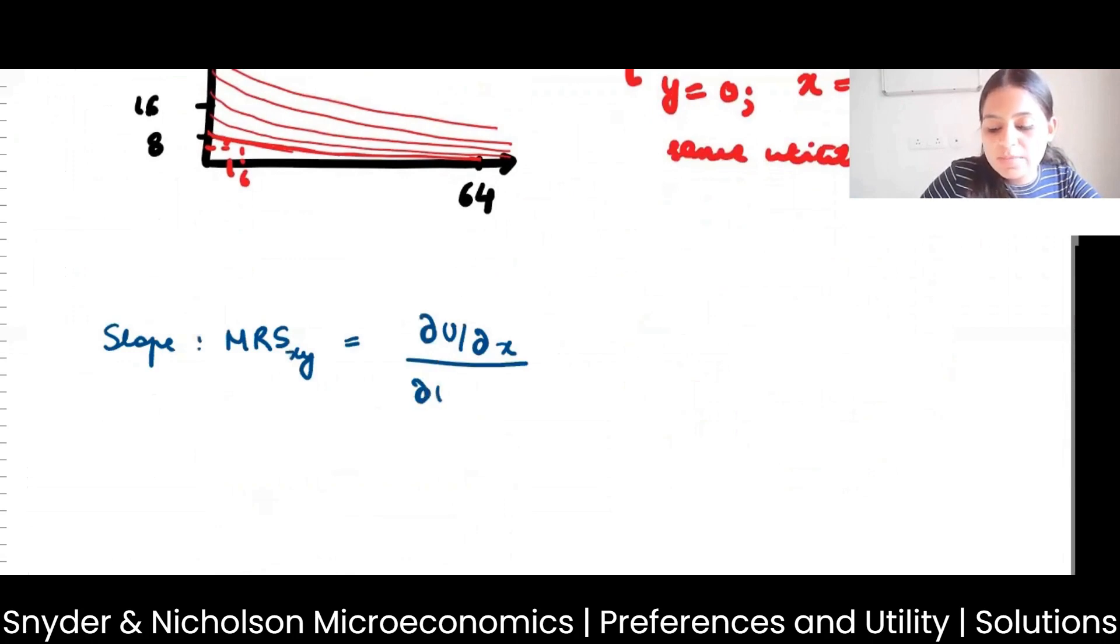So if my utility function is root x plus y, and you differentiate this with respect to x, what will you get? You will get 1 by 2 root x. And if you differentiate this with respect to y, you will get 1.